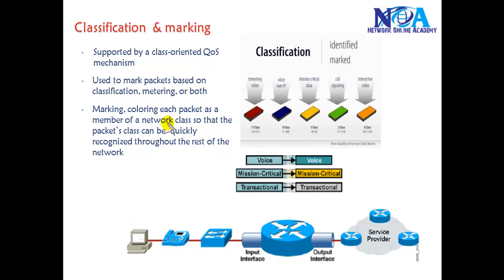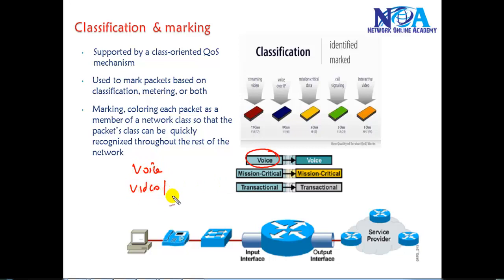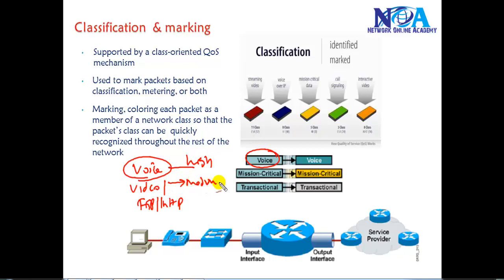The first mechanism is classification and marking. In your network you are sending voice traffic, video traffic, critical traffic like database traffic, and other traffic like FTP or HTTP. The first thing we do is classify the traffic as high priority, medium priority, and low priority. This method is called classification — it is a method of defining different types of traffic into different categories so that we can define what kind of priority should be given to which traffic.